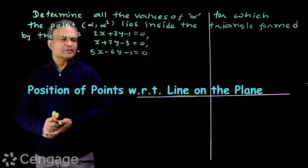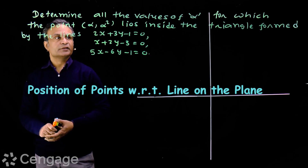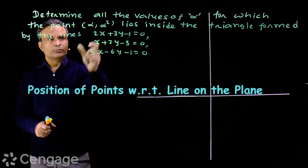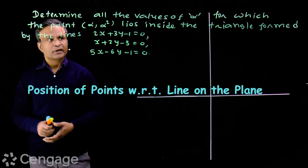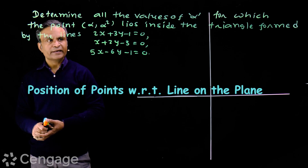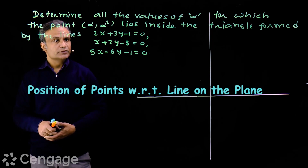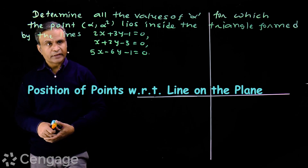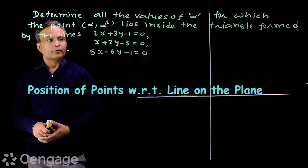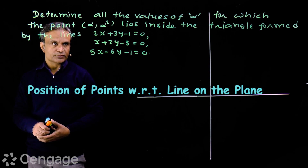Let us try this question once asked in a GE exam. The question is: determine all the values of alpha for which the point (alpha, alpha squared) lies inside the triangle formed by the lines 2x + 3y - 1 = 0, x + 2y - 3 = 0, and 5x - 6y - 1 = 0.